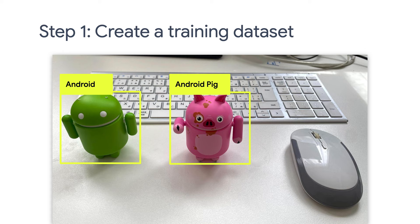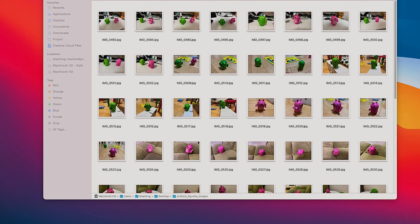There are many tools that you can use for data labeling. LabelImg is a popular open source app for this purpose, and I'll show you how to create an Android figurine object detection dataset using LabelImg. I started with taking about 70 images of the two Android figurines. In general, the more images you collect, the better models you can train. However, because we use a technique called transfer learning to train the model, you can start small with a few dozen images for each type of object you want to detect.